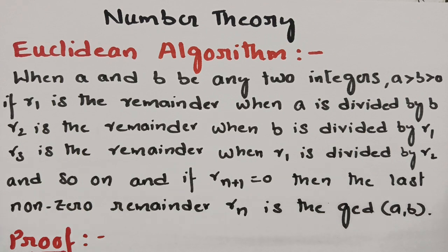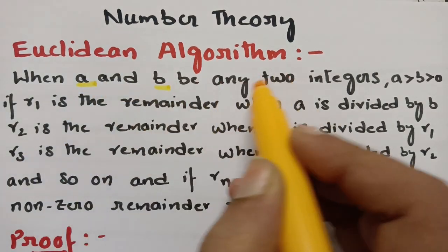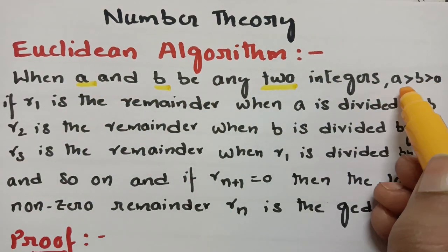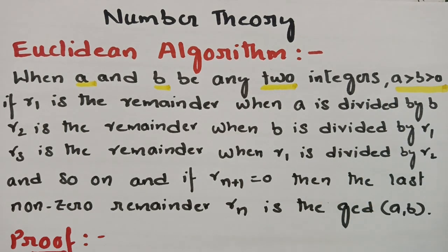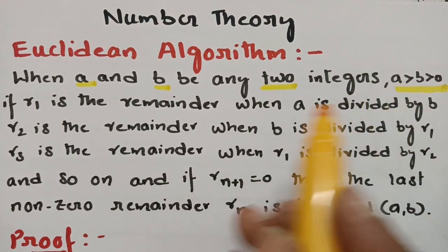Today's most important topic is the Euclidean algorithm. This is from number theory and is related to MFCS, DMS, and DMGD. The statement of the Euclidean algorithm states that when A and B are any two positive integers.